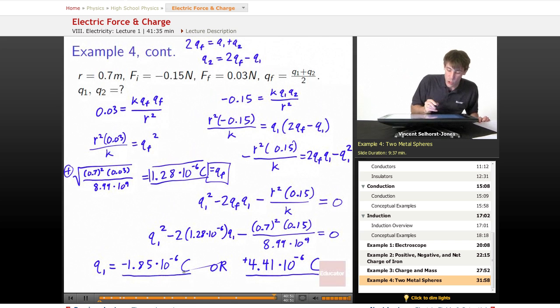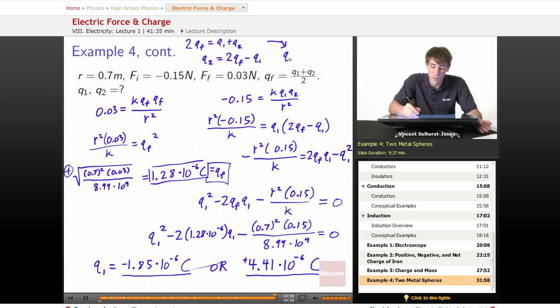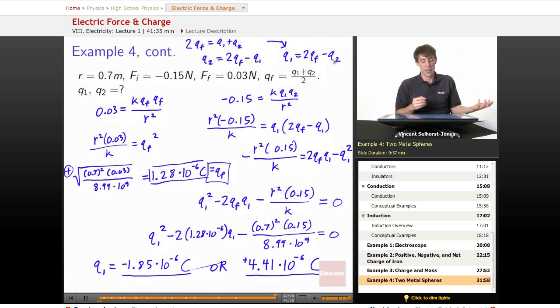So how do we know which one to choose? Well, one thing to notice is that we could have also done this another way, where we could have broken Qf, and we could have solved for Q1, and we could have gotten Q1 is equal to 2Qf minus Q2. So they're symmetrical. So however we did this, one of them, one of those charges will be negative 1.85 times 10 to the negative sixth.